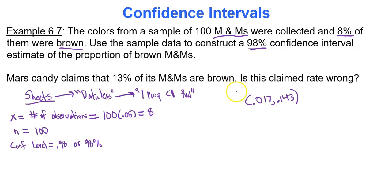So is Mars' claimed rate wrong? I would say that since 13% is in the interval, remember, 13% is literally 0.13, the claimed rate is not necessarily wrong. The claimed rate is not necessarily wrong because 13% lies in that interval there.